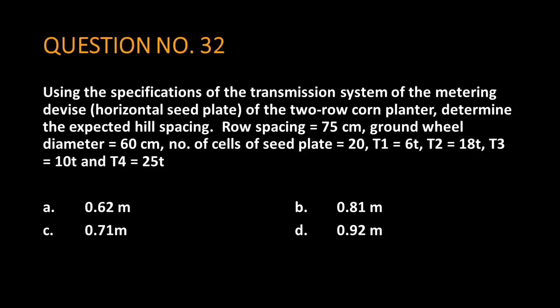Question number 32. Using the specifications of the transmission system of the metering device, horizontal seed plate, of the two-row corn planter, determine the expected hill spacing.